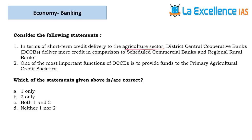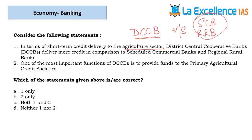The next question is about credit delivery in the agriculture sector. Out of total money given to agriculture, comparing cooperative banks, scheduled commercial banks, and regional rural banks — even though cooperative banks give more loans in number, the total quantum of money given is more by commercial banks since they are bigger institutions. Statement 1 is eliminated. One important function of DCCBs is to provide funds to primary agriculture credit societies. So the answer is B.